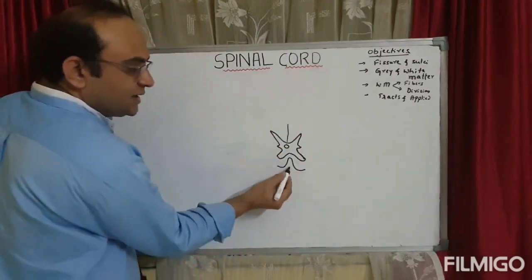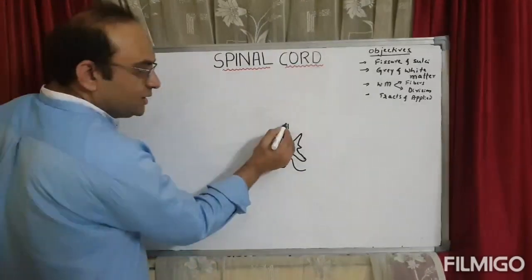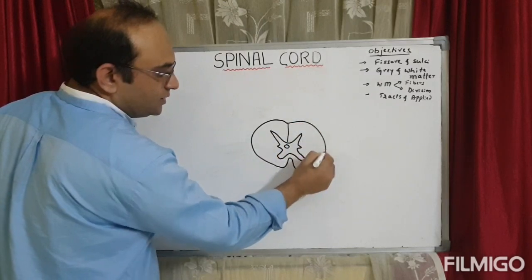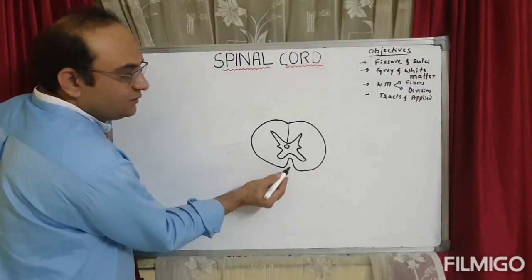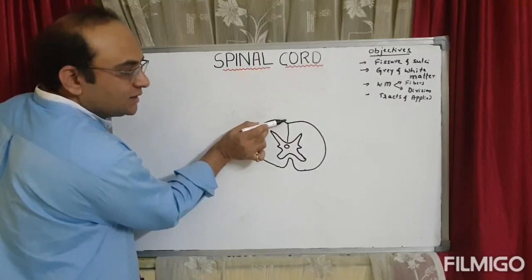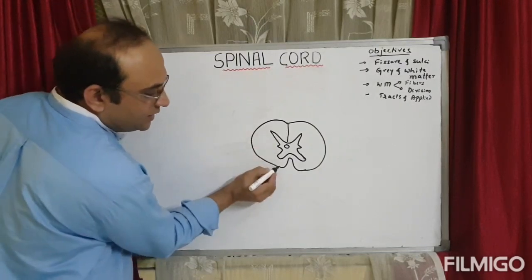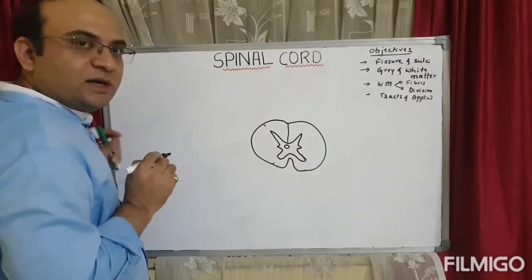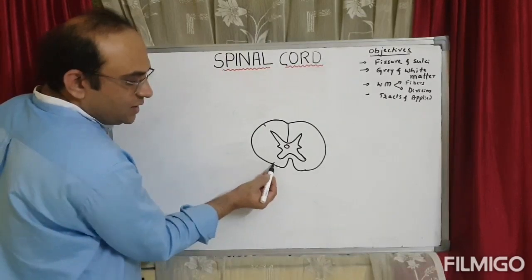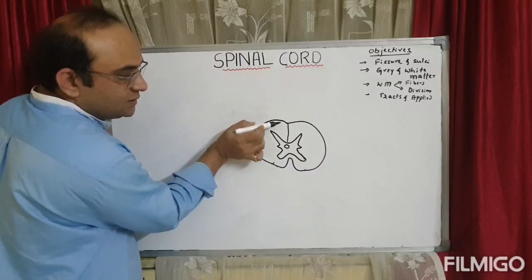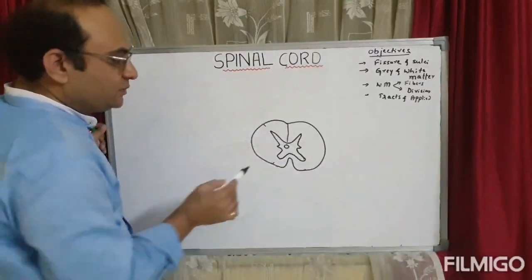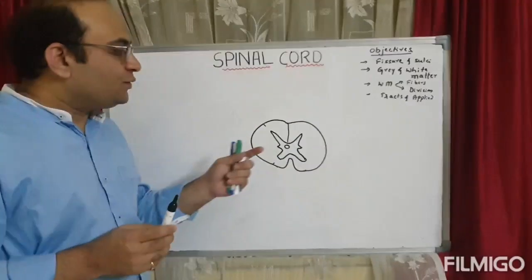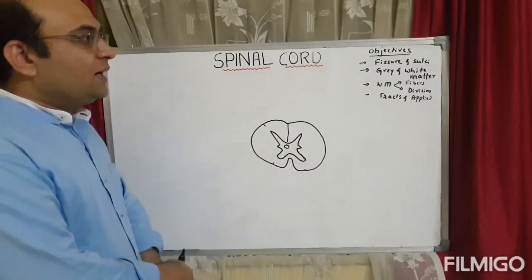To complete the diagram, you have the anterior median fissure — which is quite deep — the posterior median sulcus, and the posterior median septum. You also have the anterolateral sulcus and the posterolateral sulcus. So from anterior to posterior: anterior median fissure, anterolateral sulcus, posterolateral sulcus, posterior median sulcus, and posterior median septum, with the central gray matter and central canal surrounded by white matter.